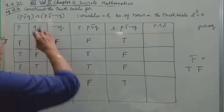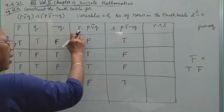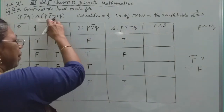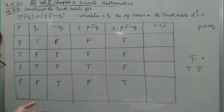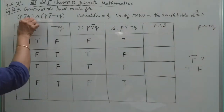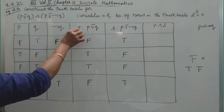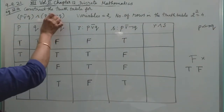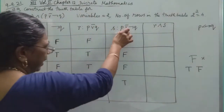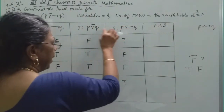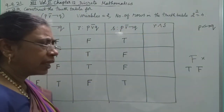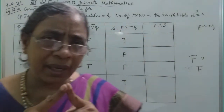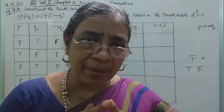Now, in the brackets, we have R and S as the two compound statements. Now the two statements are joined by CAP (AND). CAP gives true only when both R and S are true — that is the conjunction rule for the compound statement.